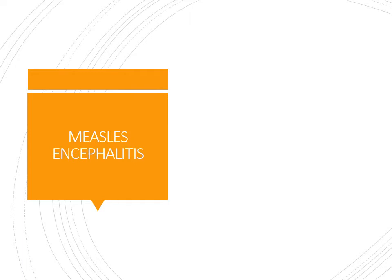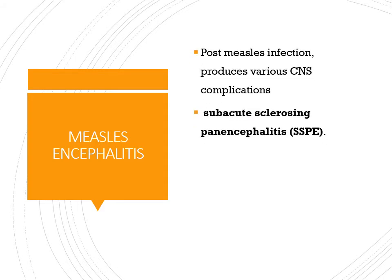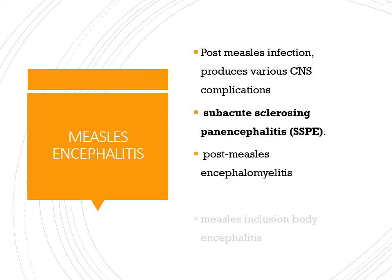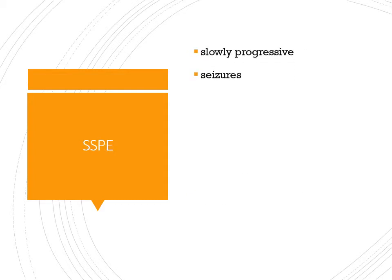Another slow virus disease is measles encephalitis, seen after measles infection and in very rare patients having CNS complications — usually in children less than 2 years of age. The disease is called subacute sclerosing panencephalitis (SSPE), also known as post-measles encephalomyelitis, in which inflammation of the myelin sheath occurs. It is also called measles inclusion body encephalitis.